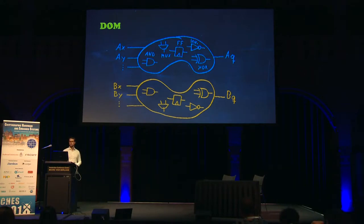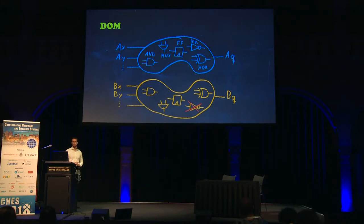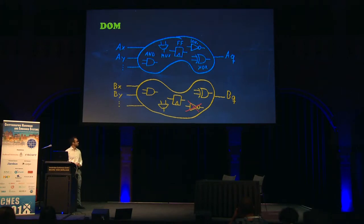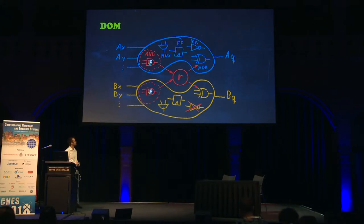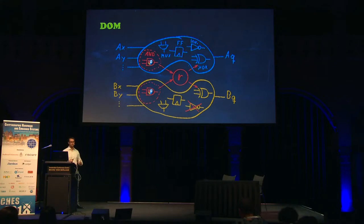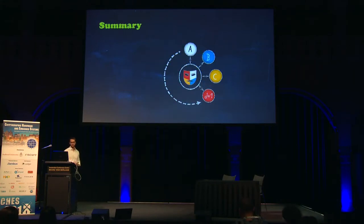The only problem with this circuit is that it's not correct yet — it's secure, but not correct. For linear operations, we just need to fix the inverters in the second domain. Things get more complicated for nonlinear operations like the AND gate, because the domains need to communicate with each other over a protected channel, and this usually involves some fresh randomness. We'll go into details on this later.